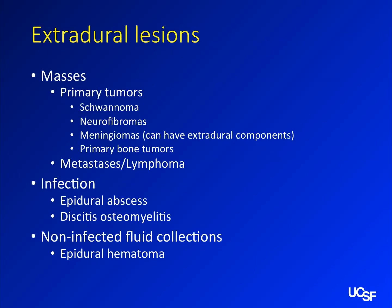Extradural lesions tend to be things spreading from elsewhere. You can still have tumors arising from the nerve root or from primary tumors of the bone — osteosarcomas, chondrosarcomas. Infection can spread from the epidural space and so on. If you can localize where your disease process is, you've gone a long way towards figuring out what's going on.